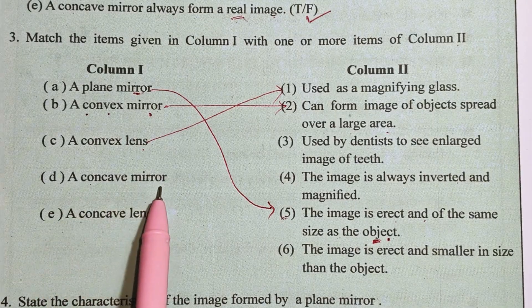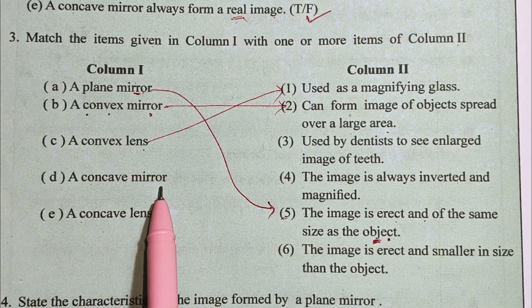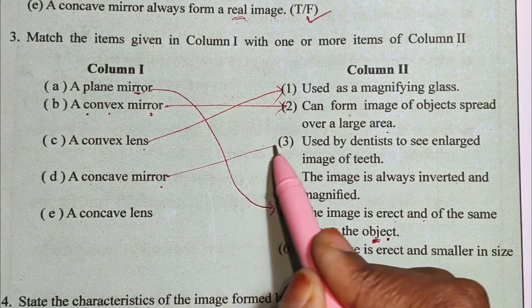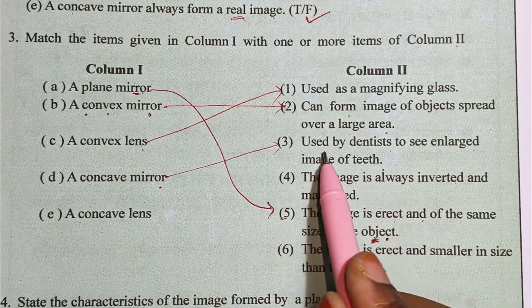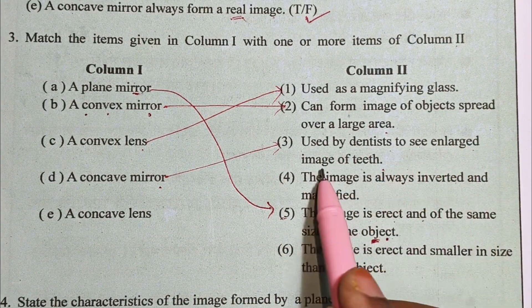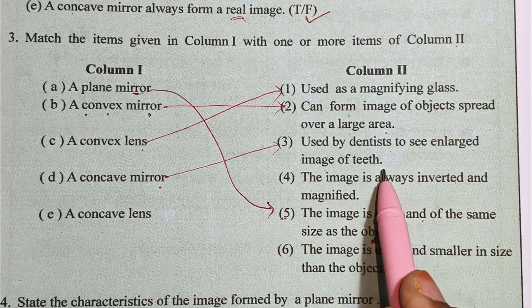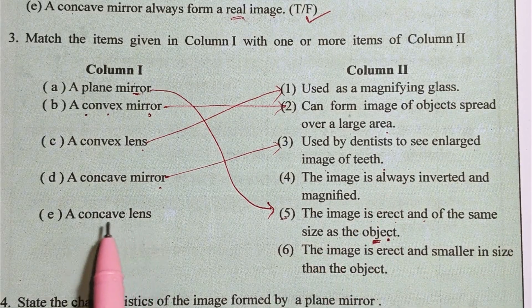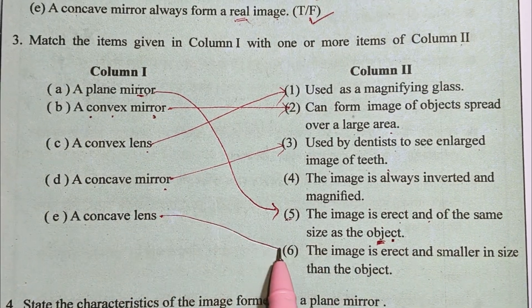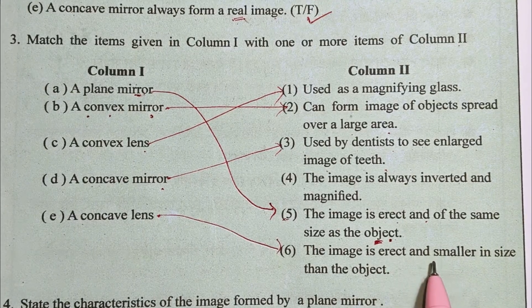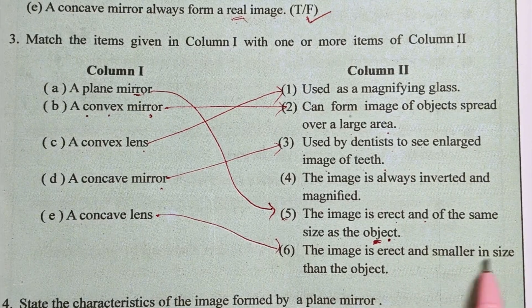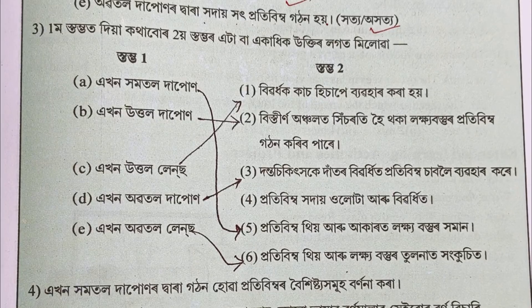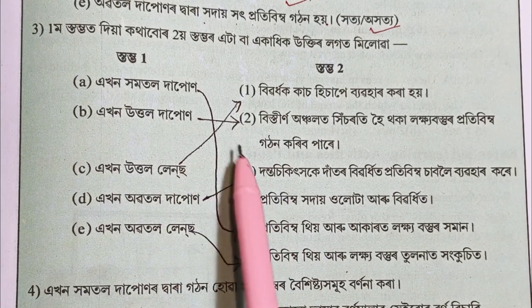Number D: This is a concave mirror — used by a dentist to see a large image of teeth. Number E: This is a concave lens — the image is erect and smaller in size than the object.